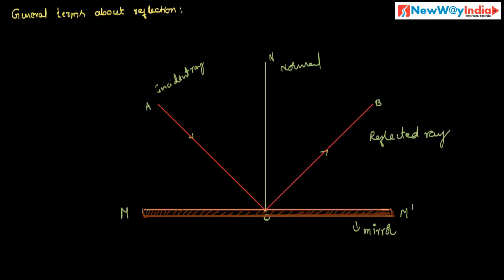Next, another important term: angle of incidence. The angle made by the incident ray with the normal is called angle of incidence. It is represented by I. Here, angle AON is the angle of incidence.